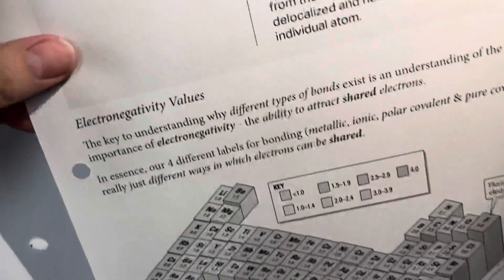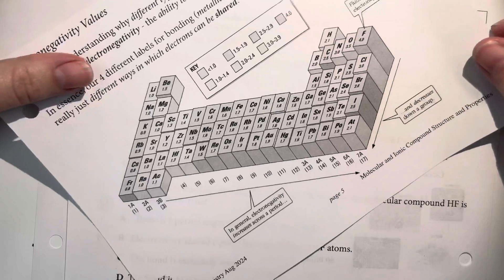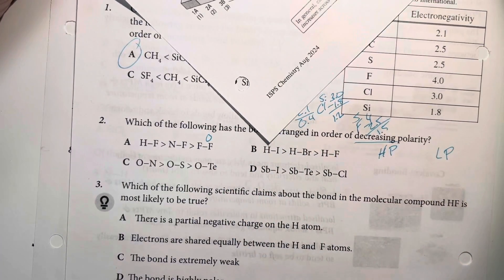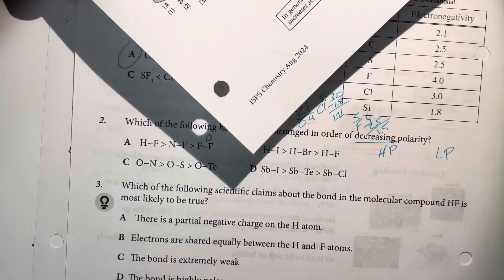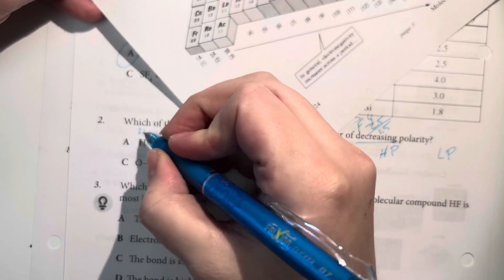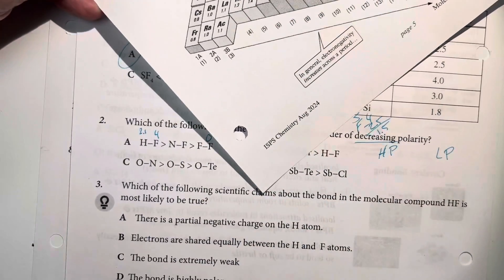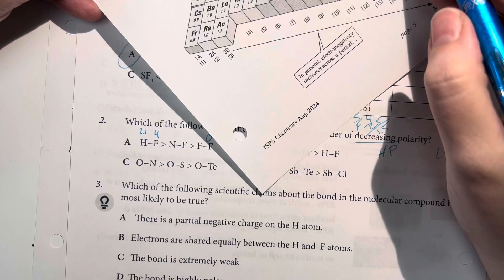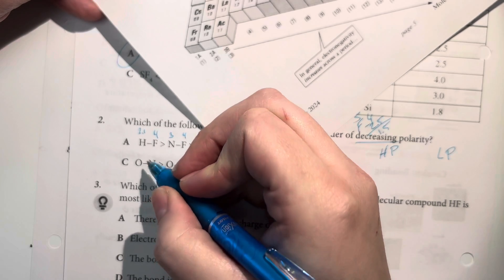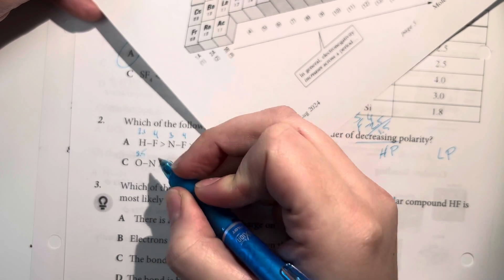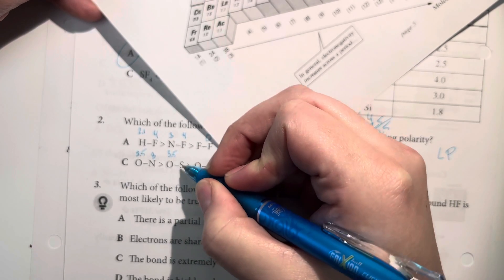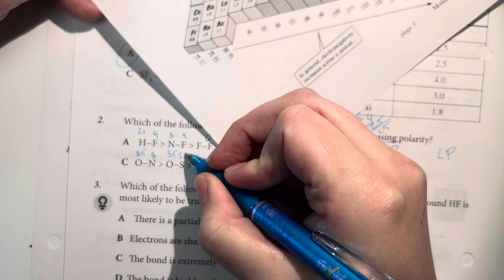In the actual note packet we have the electronegativities of all of the elements, so we can compare there. Anything bonded with itself is going to be an electronegativity difference of 0. Hydrogen has an electronegativity of 2.1, fluorine is 4, nitrogen is 3, fluorine again is 4, oxygen is 3.5, nitrogen is 3, oxygen is 3.5, sulfur is 2.5.